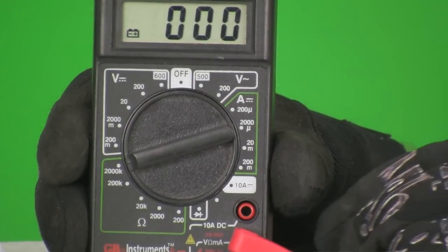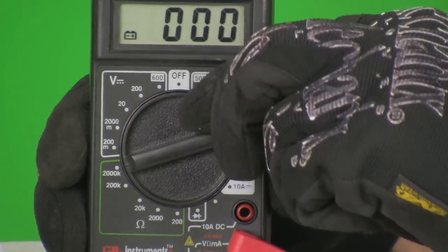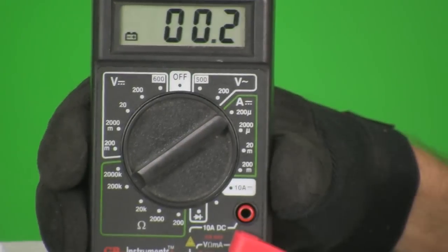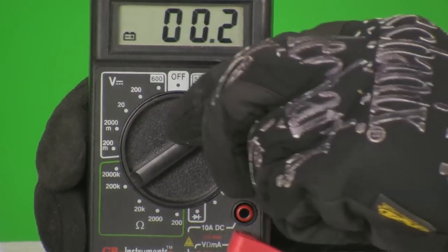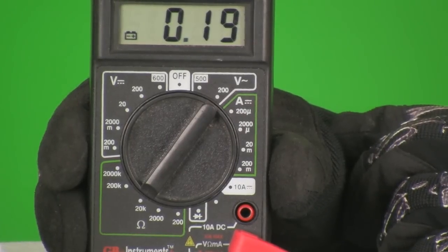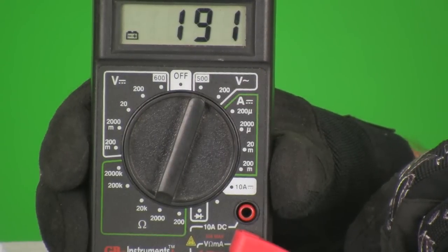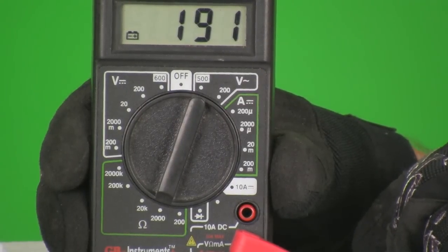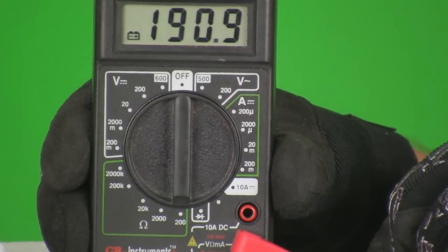Let's adjust the sensitivity setting on the meter and see what we get. On the highest scale, 2 million, I can see that electricity can flow but no resistance is detected. We drop one zero to 200,000. Point two is the measurement. We drop another zero to 20,000. We drop another zero to 2,000. 191 is the measurement. We drop one more zero to 200, and the decimal point moves over one more position.